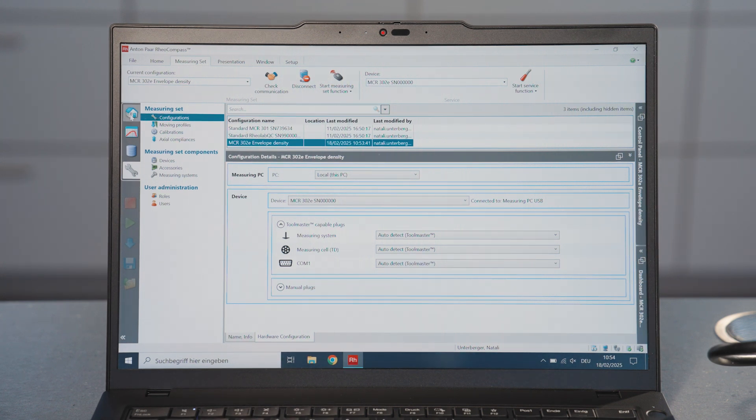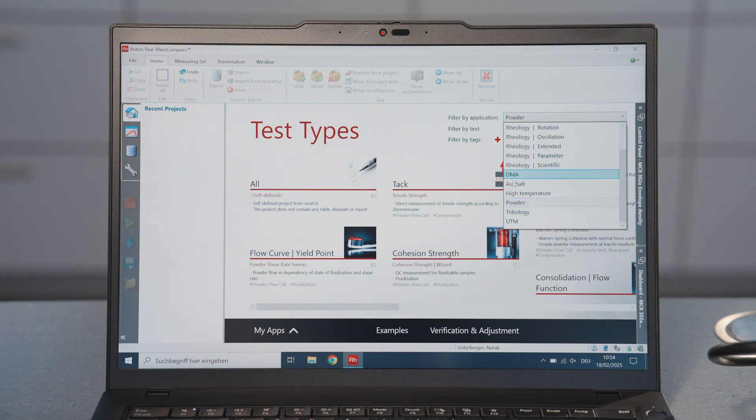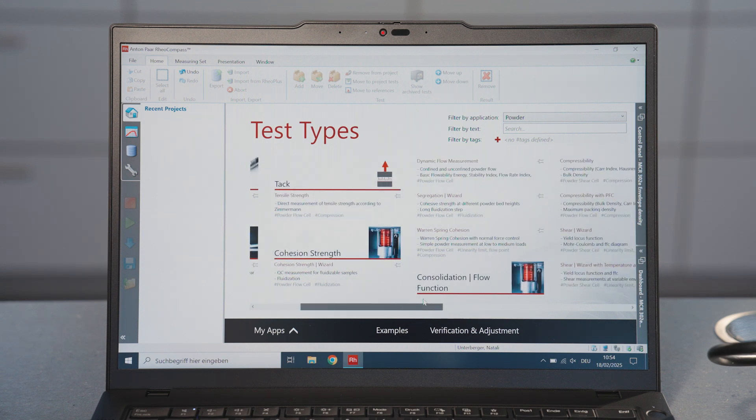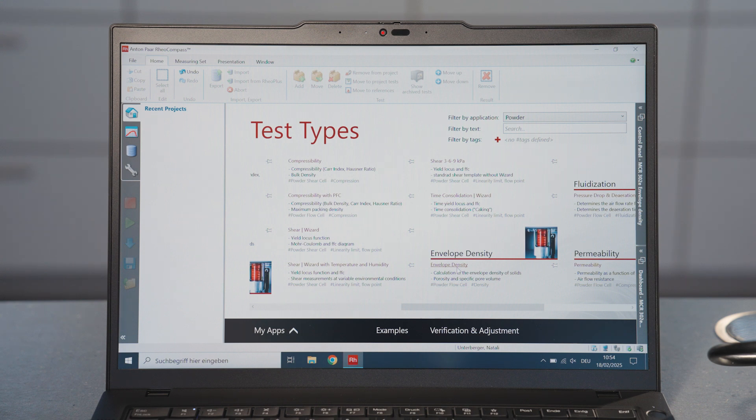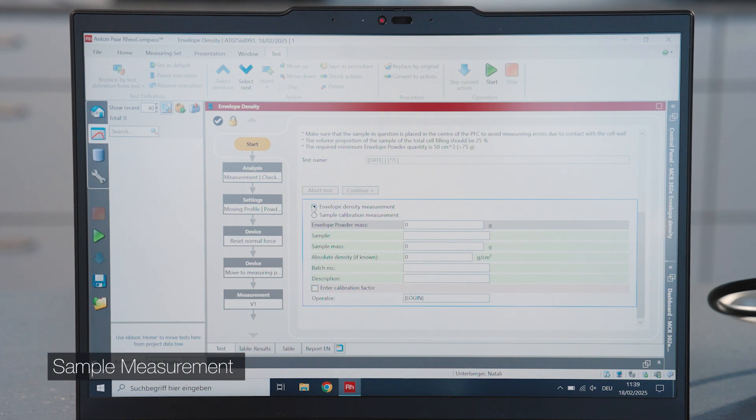Navigate to the Ribbon on the left side and click the My Apps icon. Create a project file by selecting Envelope Density in Anton Paar Apps. Select Envelope Density Measurement on the Start screen.